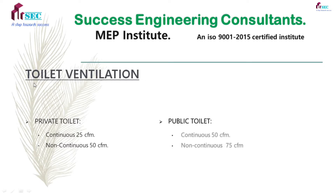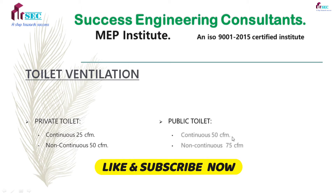This is one toilet ventilation comment. There are two types of toilet: private toilets and public toilets. For private toilets, if the fan is continuous running then 25 CFM; for non-continuous running, 50 CFM is considered. For public toilets, continuous running is 50 CFM and non-continuous is 75 CFM.